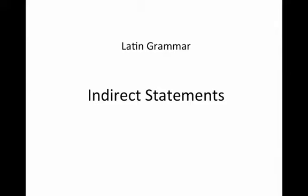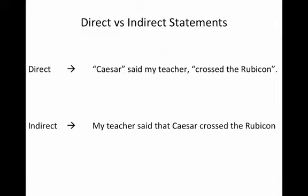Today in Latin grammar we're going to talk about indirect statements. But before we do that, let's talk about the difference between direct and indirect statements. A direct statement is when someone is quoted as saying something — so 'Caesar said my teacher crossed the Rubicon' is a direct statement. Whereas an indirect statement does not have quotes and uses 'that' to separate the two halves: 'My teacher said that Caesar crossed the Rubicon.'